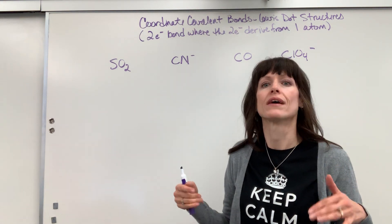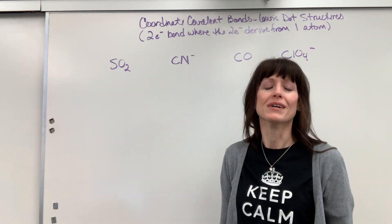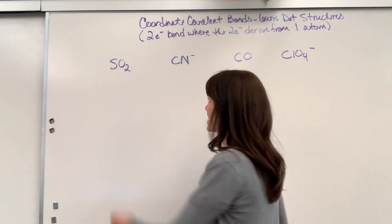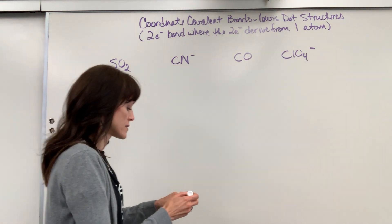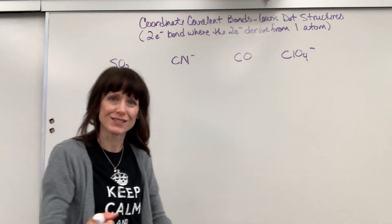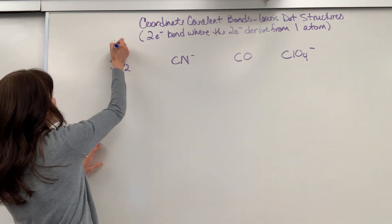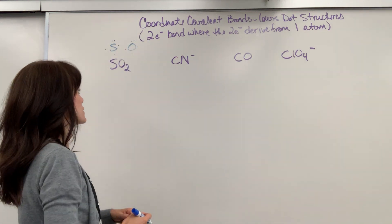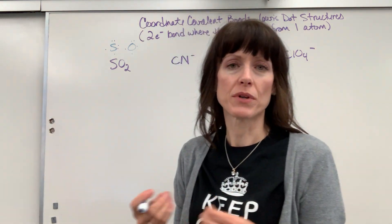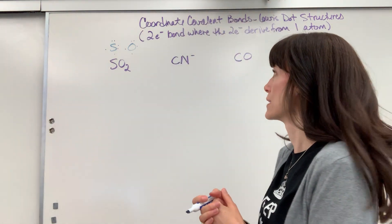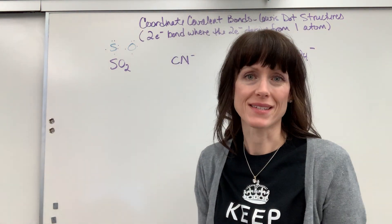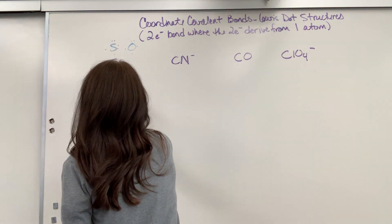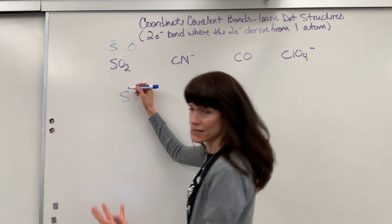If you want to understand coordinate covalence, you're going to walk away and go, 'Oh, I get it.' The best way to show you this is to just jump in and do it. Sulfur has six valence electrons and oxygen has six valence electrons, and we have two oxygens. They have the same number of valence electrons — so which one is going to be my central atom? It'll be the one that's by itself, and honestly some of this comes from experience. Sulfur is going to be my central atom.